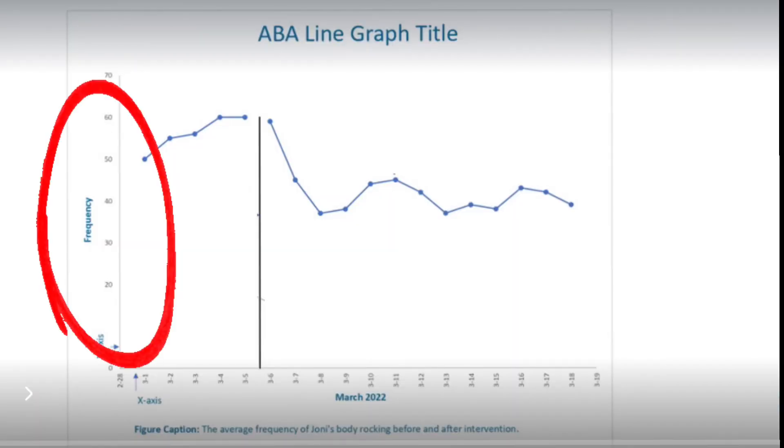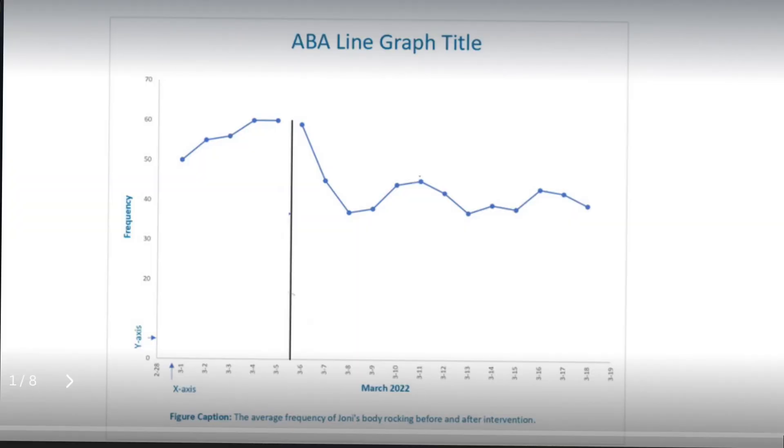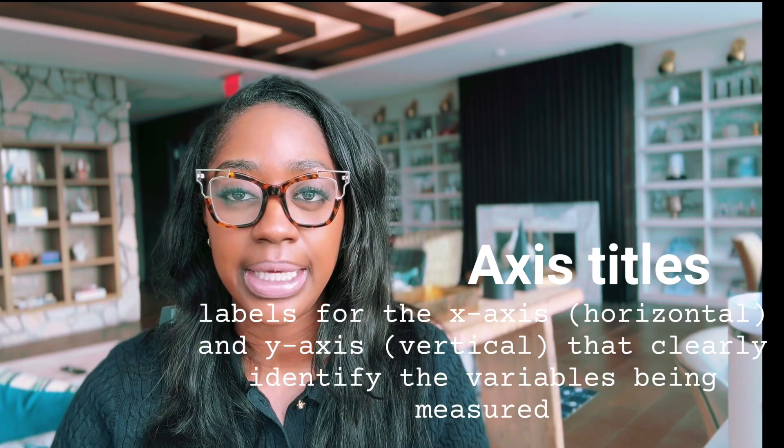The axis titles are just as important as the graph title. The axis title tells you exactly how you are measuring. Remember, the y-axis measures behavior — but when you add the title, it helps you identify which measurement you're using. Are you tracking frequency? Are you tracking duration? Are you tracking percentage? You want to put that in the title so everybody knows how to interpret this graph. Same with the x-axis — it shouldn't just say "time," it should say "months" or "sessions" or "years." The axis title labels exactly what is along that axis.